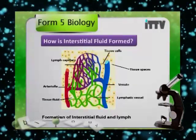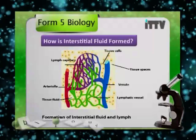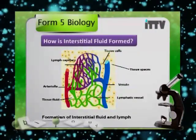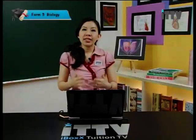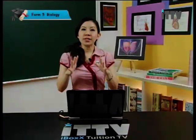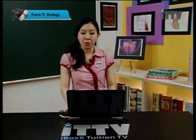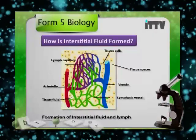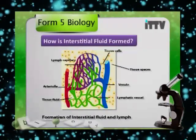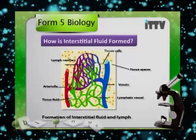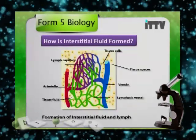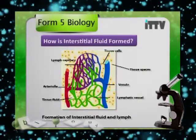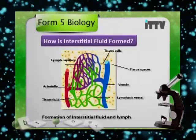If you refer to the diagram, at the arterial end of the capillaries there would be a high hydrostatic pressure that forces the blood fluid out of the capillary walls into the intercellular space. There will be some lymph capillaries there whereby 10% of this fluid will actually be absorbed back into the lymph capillary, whereas 90% will be reabsorbed back into the venule end of the capillaries.